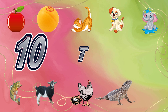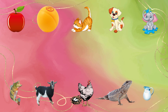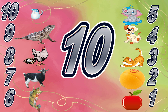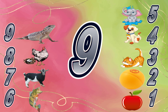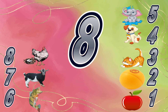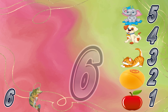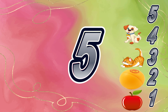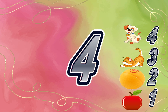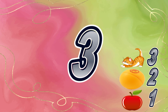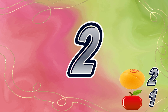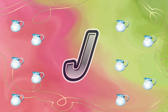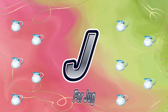10 — TEN. Countdown: 10, 9, 8, 7, 6, 5, 4, 3, 2, 1. J for Jug: 10, 9, 8.